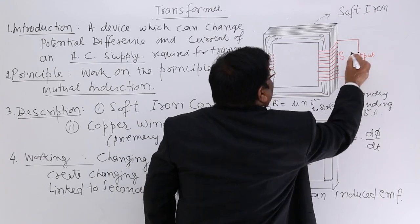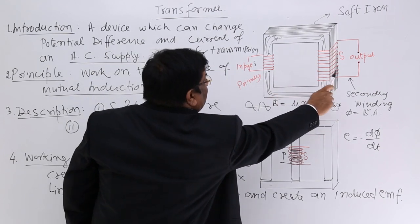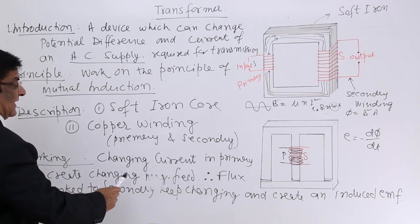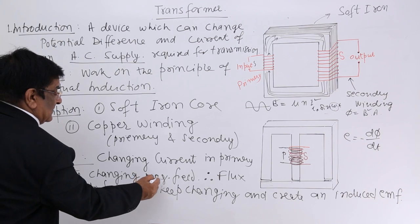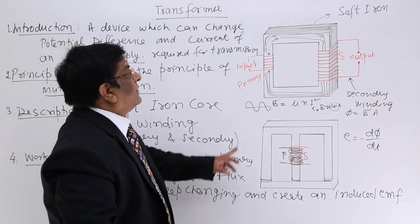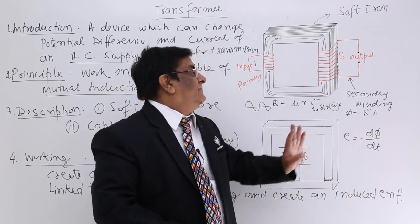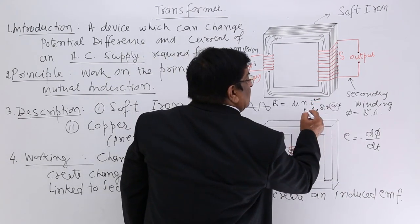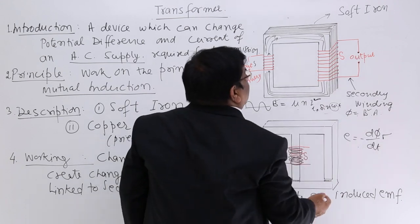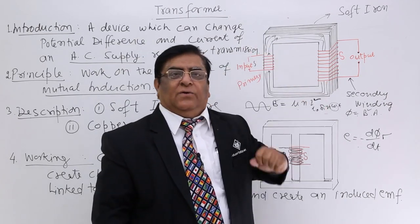This is how we get an EMF in the secondary: we supply EMF in the primary and we get EMF in the secondary. The changing current in the primary creates a changing magnetic field, the flux linked to the secondary keeps changing, and this changing flux creates an induced EMF which we use as the secondary potential difference. This is how a transformer works.